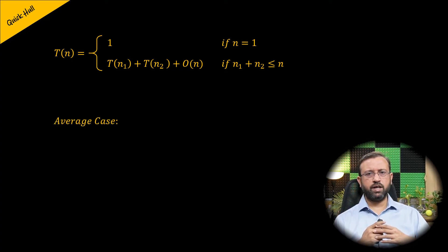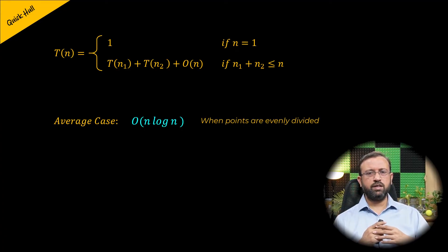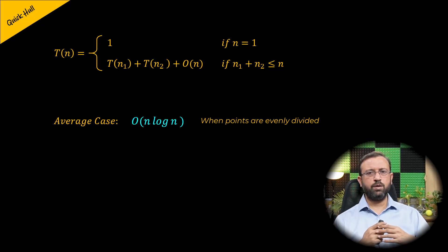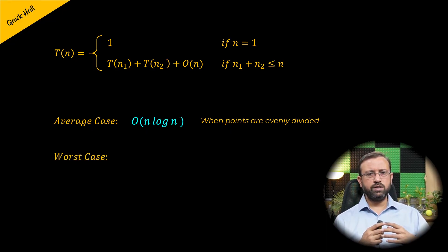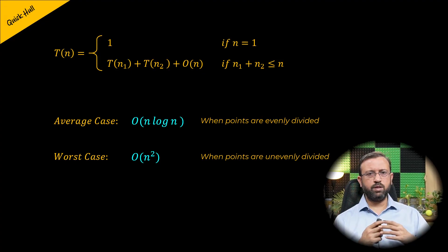This recurrence relation T(n) is similar to the quicksort algorithm. Therefore, the average time taken by the quick hull is O(n log n), when the division of n points between the upper and lower hull is nearly even. In the worst case, when the n points are unevenly distributed in the upper and lower hull, the time complexity will be O(n²). This happens when the partitioning at each level of recursion is highly uneven.